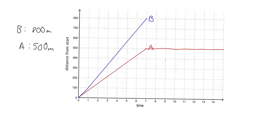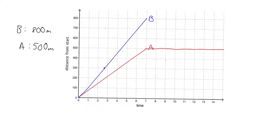We could also ask: who was walking faster, B or A? Hopefully you can see quite easily that because in those seven minutes B walked a whole lot further than A, B must have been walking faster. This shows up nicely in the graph through the fact that the slope of the B graph is bigger than the slope of the A graph — B covered a greater distance in those seven minutes than A did.